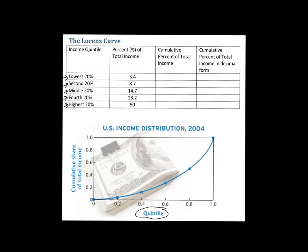We can do this for a population as well. This is actually done for U.S. income. When we look at that lowest 20 percent, we ask what percent of the total U.S. income was that? In 2004, that lowest 20 percent earned 3.4 percent of total income. We're going to write this as a cumulative sum, so the lowest 20 percent is just 3.4 percent.